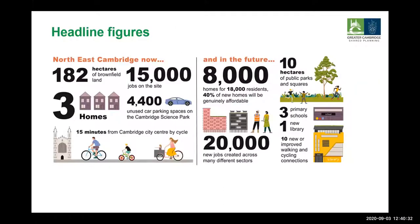Some key headline figures: there's about 182 hectares of brownfield land, that's actually bigger than Cambridge City Centre — the equivalent of walking from the Beehive Centre all the way through to the Backs. There are 15,000 jobs on the site at the moment but only three homes, and around 4,400 unused car parking spaces on Cambridge Science Park, so there's quite a lot of scope to intensify development. In the future we're looking at around 8,000 new homes, about 18,000 residents, and 40% is the target for new affordable housing. We think there'll be an uplift of around 20,000 new jobs across a range of sectors, not just R&D, plus new open spaces and parks, three new primary schools, a new library, and improved walking and cycling connections.